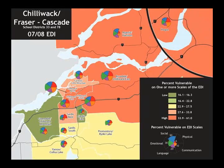The next thing we do is add onto these maps information that shows which scales are providing the vulnerability. For instance, if you look at an area like Agassiz-Harrison, which is one of the higher vulnerability areas, you can see that most of the vulnerability is coming from the social, emotional, and language scales, and not from the physical and communication skills scales. So if you're working with a local group trying to improve the situation for early child development in that area, you know which domains of development to focus on. This information is very useful for local planners, and in fact for regional and provincial planners, to decide how to make a difference for early child development.